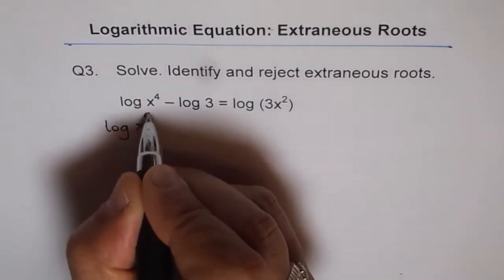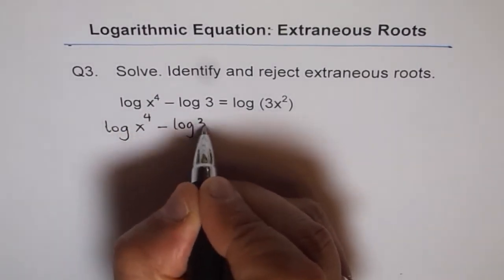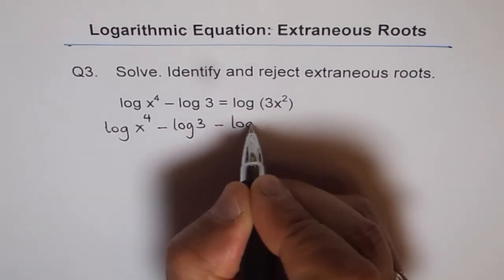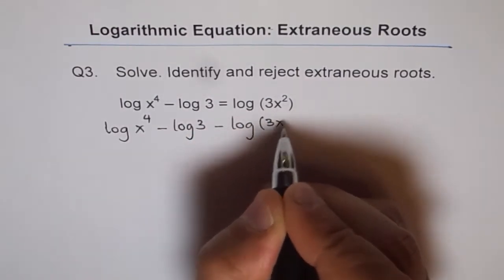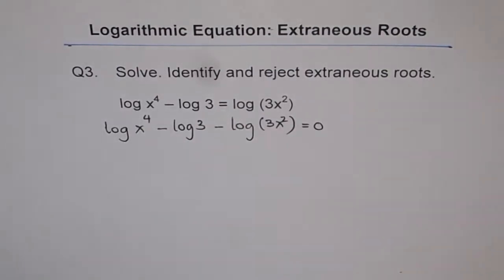So log of x to the power of 4 minus log of 3 minus log of 3x squared equals to 0.